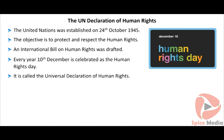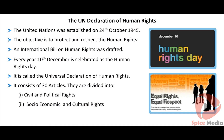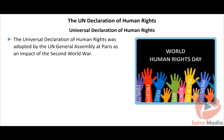It is called the Universal Declaration of Human Rights. Equality to all human beings is emphasized by the UNO. It consists of 30 articles divided into civil and political rights and socio-economic and cultural rights. On 10th December 1948, the Universal Declaration of Human Rights was adopted by the UN General Assembly at Paris as an impact of the Second World War.